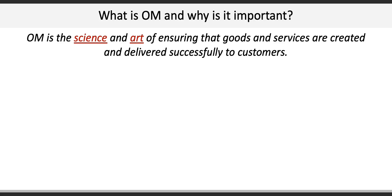OM is the science and art of ensuring that goods and services are created and delivered successfully to customers. OM is part science because there are a number of mathematical concepts and models used in OM, such as forecasting, statistical process control, and even economic order quantity models. Science is also involved in the development and manufacture of products, of course.